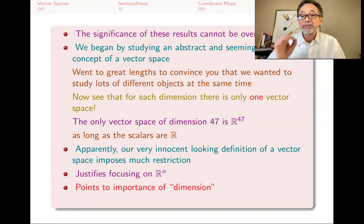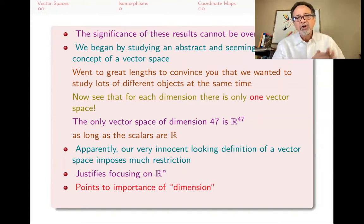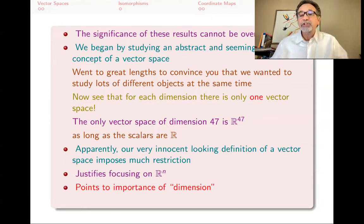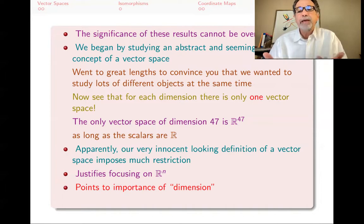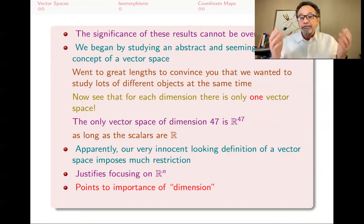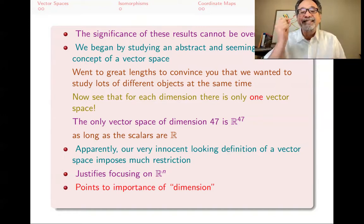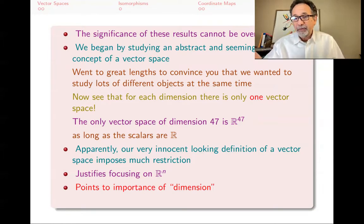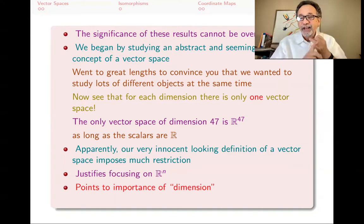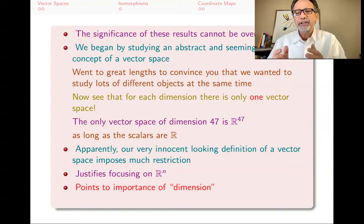This also points to the importance of dimension. For finite dimensional vector spaces, dimension is really crucial. Infinite dimensional vector spaces are different — they come in quite a bit of variety, and there are quite a few mathematicians who study only infinite dimensional vector spaces and would think of finite dimensional ones as a trivial matter, mainly because there's not that much variety there. For finite dimensional vector spaces, the key piece of information is dimension.